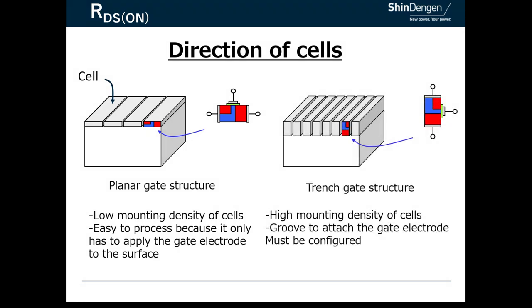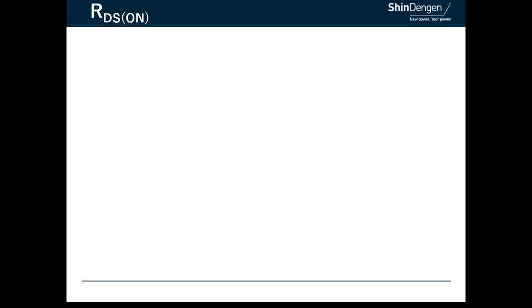On the other hand, since channel resistance accounts for a large proportion of RDS(ON) in low voltage MOSFETs, the trench gate structure is used in order to increase the mounting density of the cell as well as to miniaturize the cell.